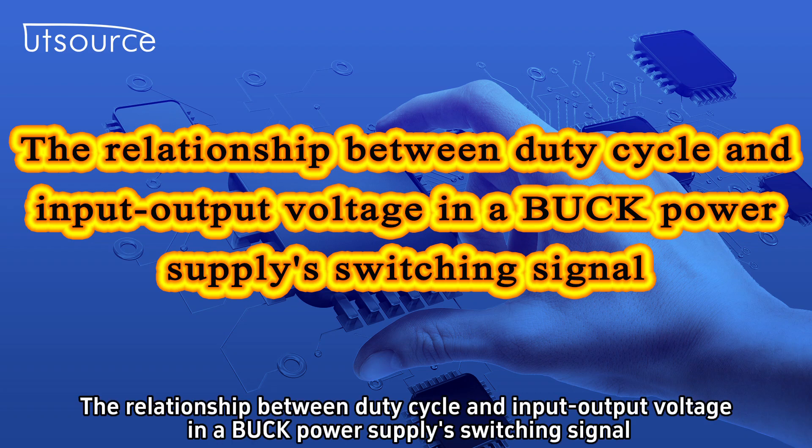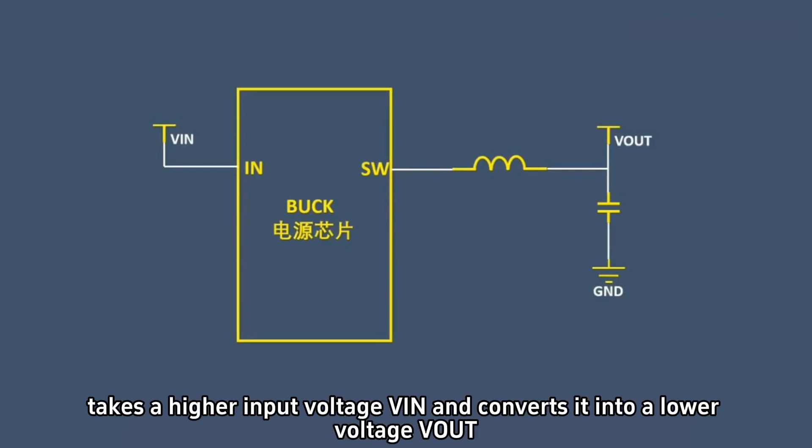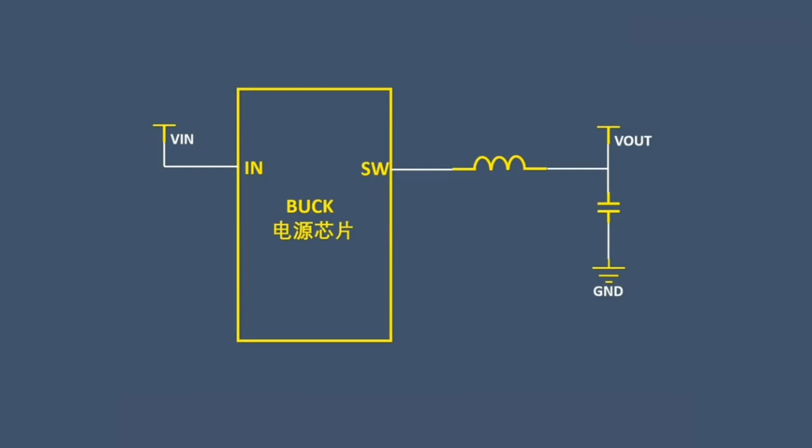This video covers the relationship between duty cycle and input-output voltage in a buck power supply switching signal. The buck circuit is a commonly used step-down circuit that takes a higher input voltage VIN and converts it into a lower voltage VOUT.